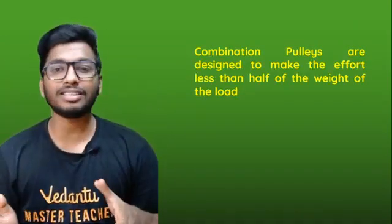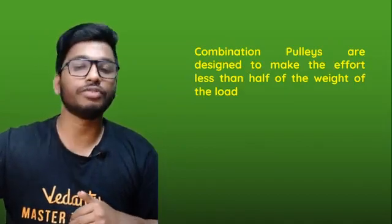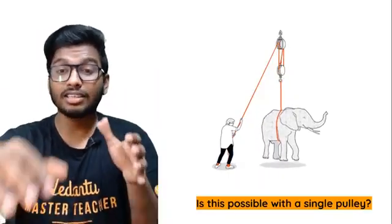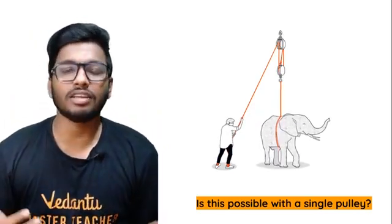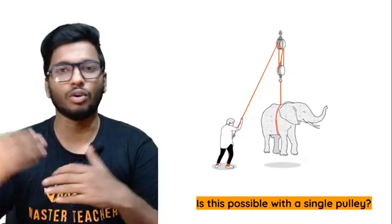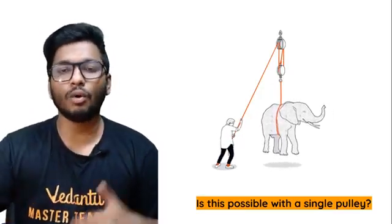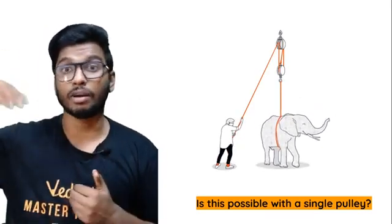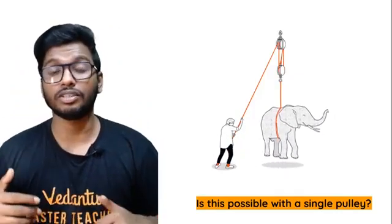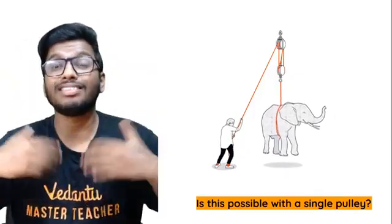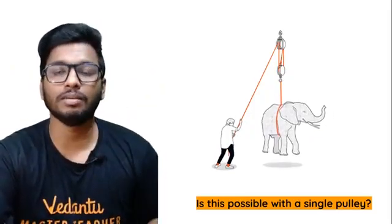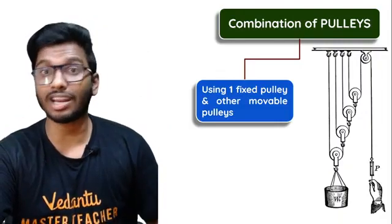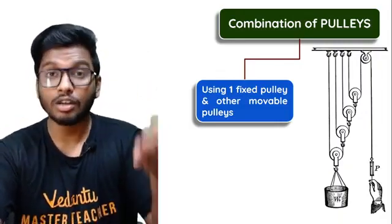Using a combination of pulleys, you achieve two things: you reduce the effort to half of the load, which is very good, and the effort is also applied in a convenient direction. A single fixed pulley alone is not a force multiplier — the effort equals the load. So if I want to lift very heavy loads, like a 10,000 Newton container, I'd need a force multiplier. What we can do is use a combination of pulleys so that effort is reduced and applied in a convenient direction.